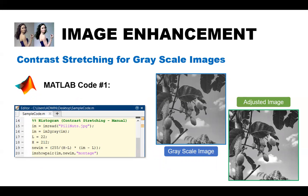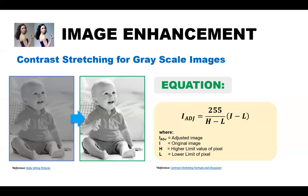So here's the code and the result using the manual method. If we evaluate the code, it does contain the exact parameters that are found on the contrast stretching equation, which is the adjusted image is equal to 255, the highest pixel value, which corresponds to white, divided by the higher or the highest pixel value minus the lowest pixel value, multiplied by the original image minus the lowest pixel value or the lower limit of pixel.